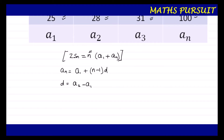The common difference is the difference between any two consecutive terms moving from left to right. I am considering a2 − a1, but you could also use a3 − a2. So d = 28 − 25 = 3. We got the value of d as 3.